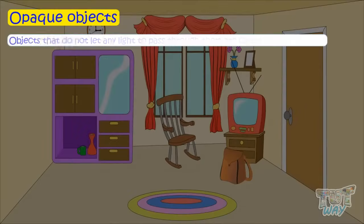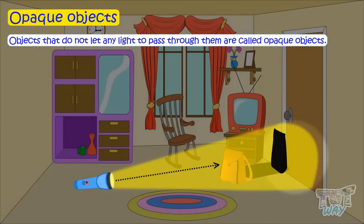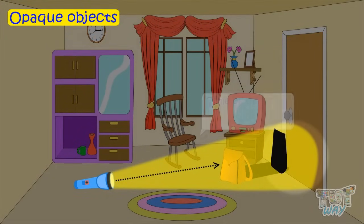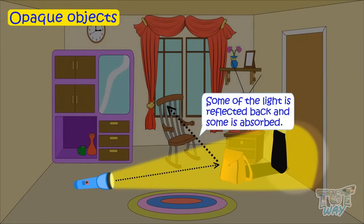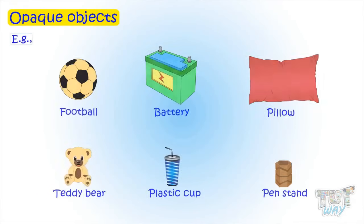Opaque objects. Objects that do not let any light to pass through them are called opaque objects. Some of the light is reflected back and some is absorbed. Here are some examples of opaque objects.